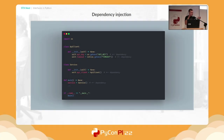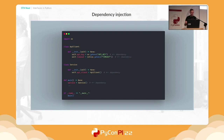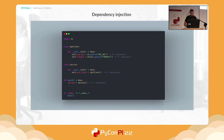We have some actions and an API client, which is basically a service. As you can see, I marked the dependency — the API key and timeout are read from environment variables. In the service, we initialize the API client directly in the init method, and the main function as a controller just runs that service.